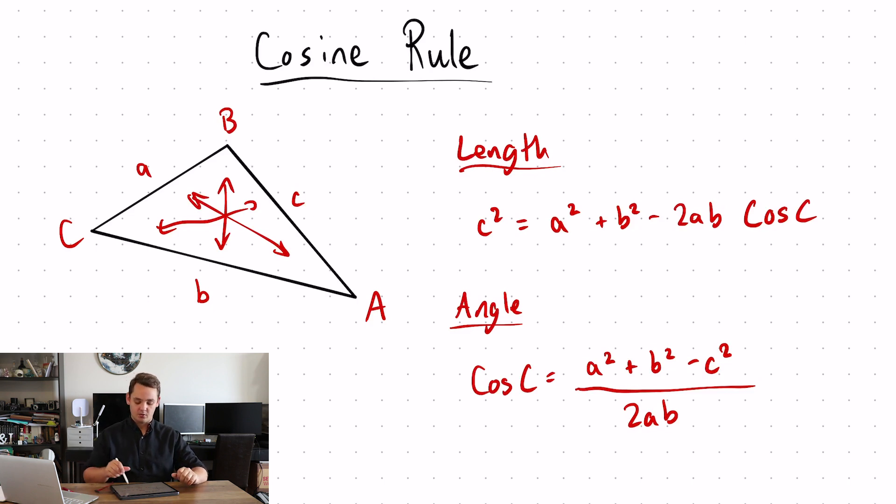It's just to make life a bit easier we have our length formula with our unknown being the length on the left hand side and our angle formula being the unknown angle on the left hand side just so we don't have to do some more rearranging.